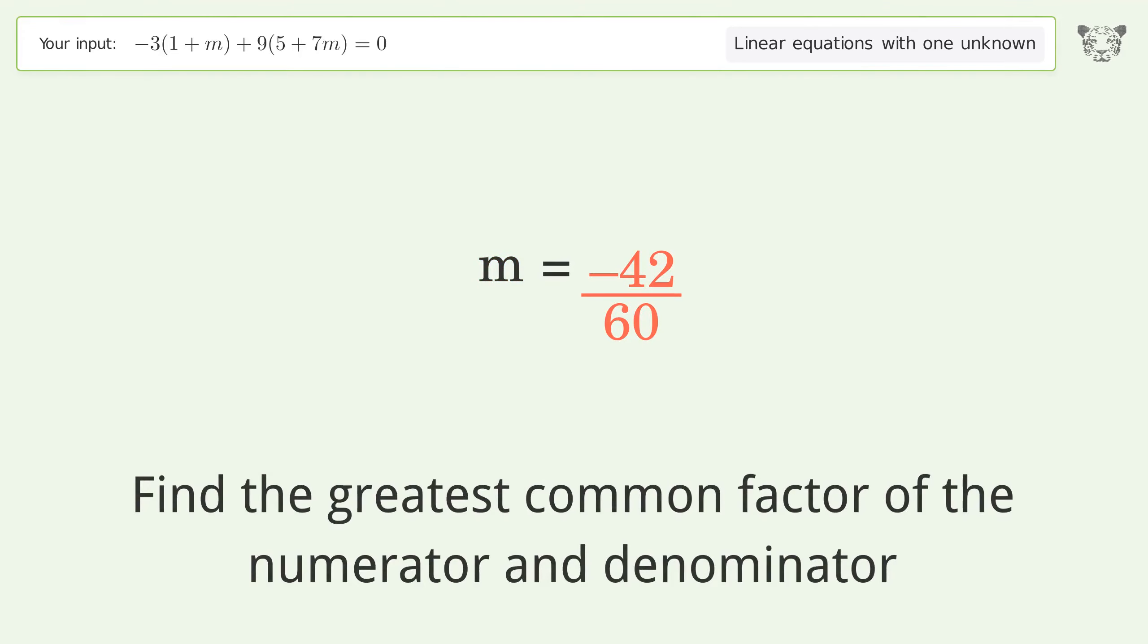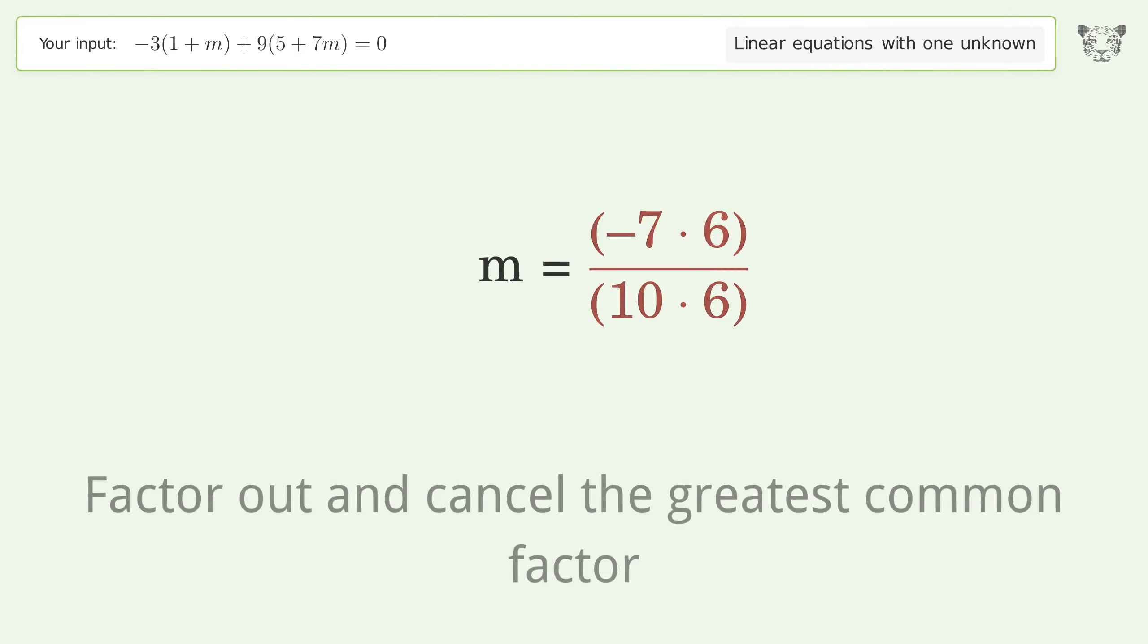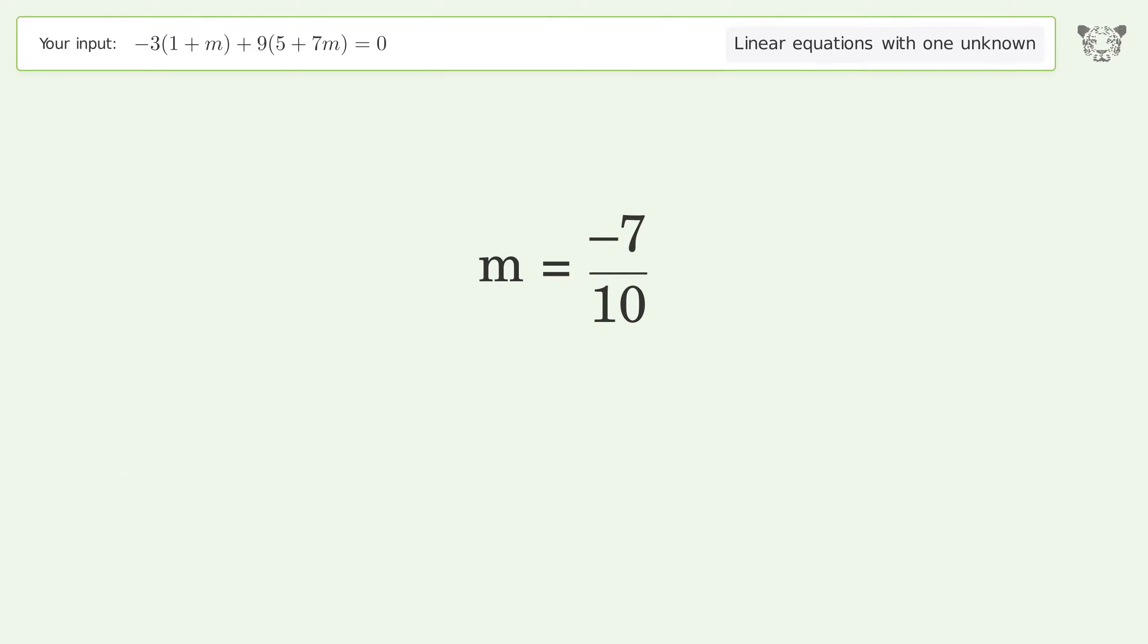Find the greatest common factor of the numerator and denominator. Factor out and cancel the greatest common factor. And so the final result is m equals negative 7 over 10.